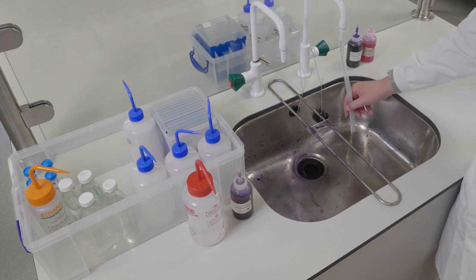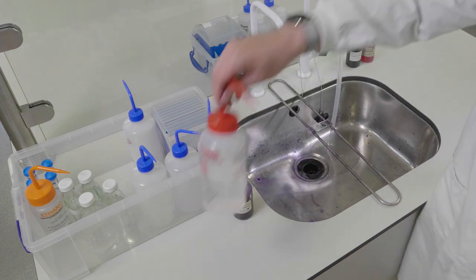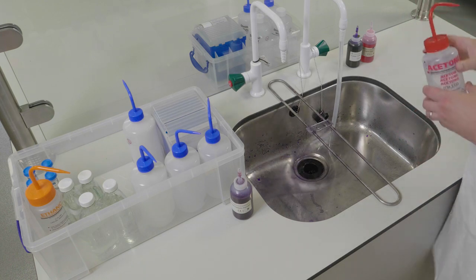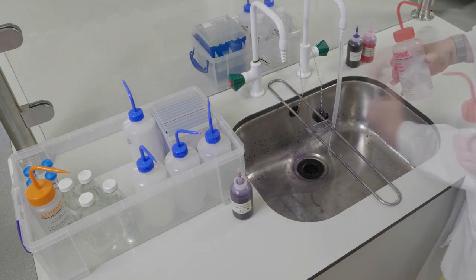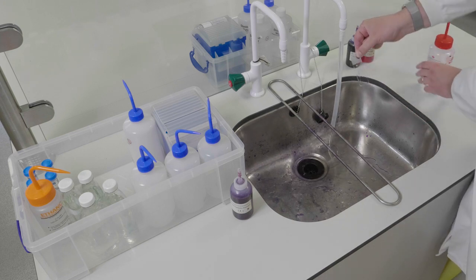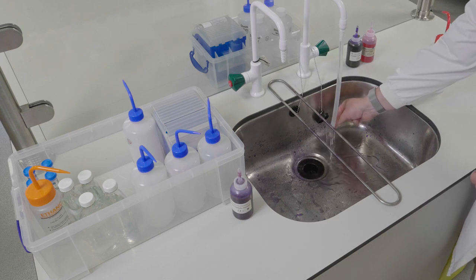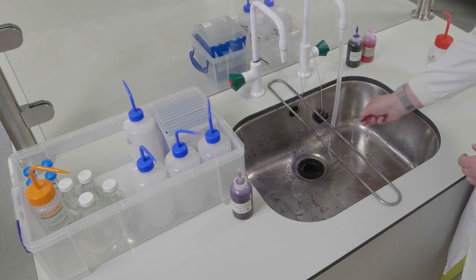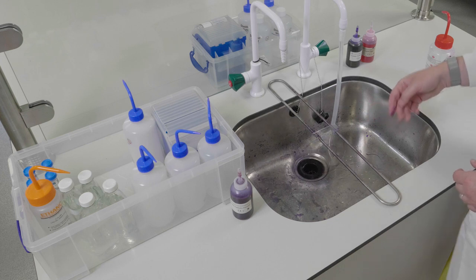Next is the critical part of the gram staining process. Take your acetone and pick up your slide. Run the acetone down the slide before immediately rinsing it off. Do not let the acetone sit on the slide as this will lead to a loss of colour with gram-positive organisms.